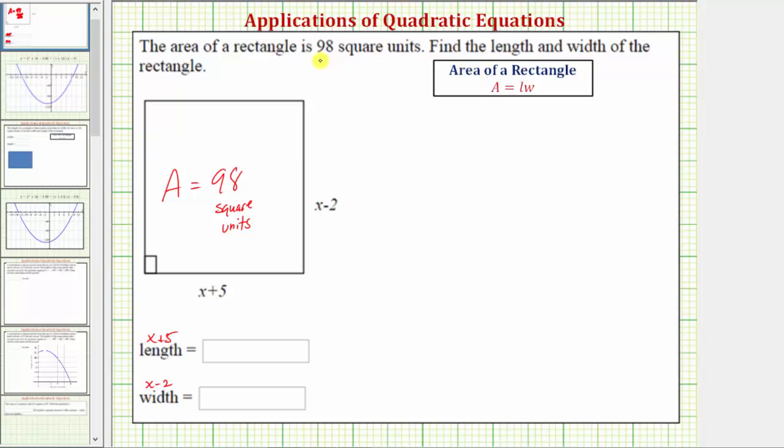So because the area is 98, the length is x plus five, and the width is x minus two, our equation would be 98 equals the quantity x plus five, times the quantity x minus two.